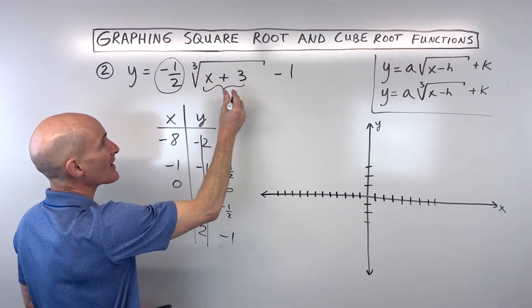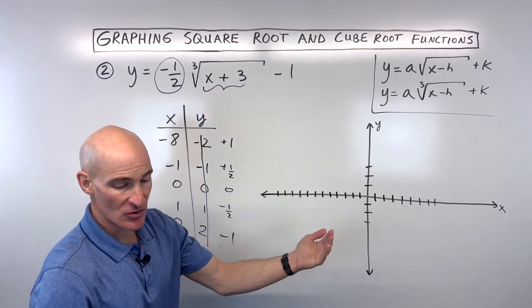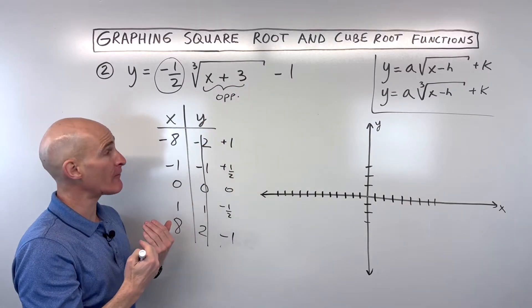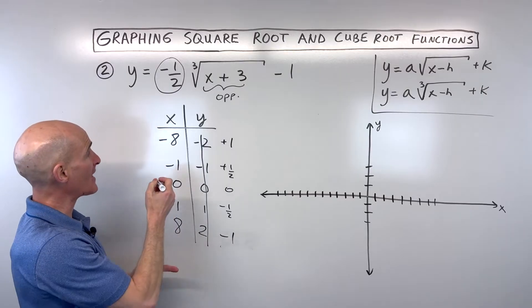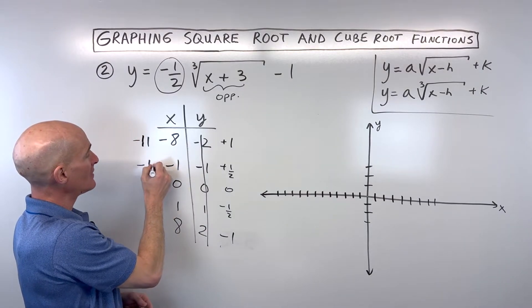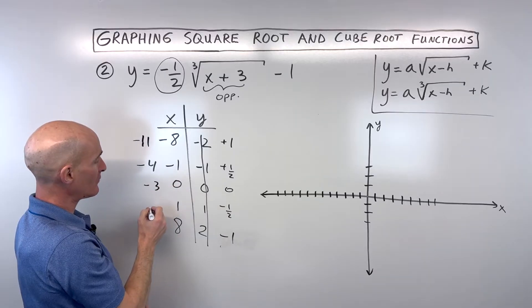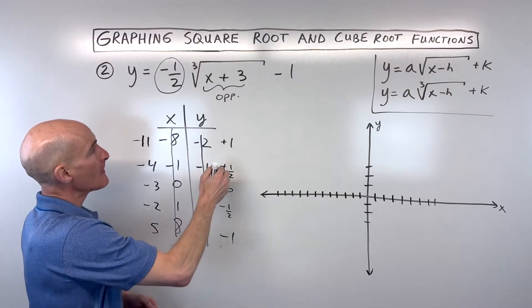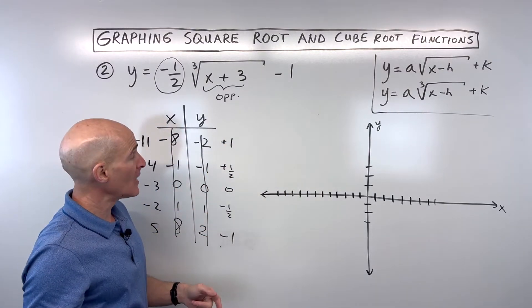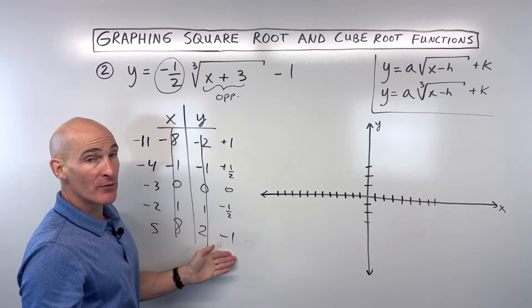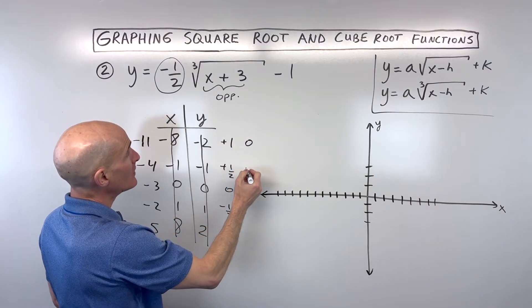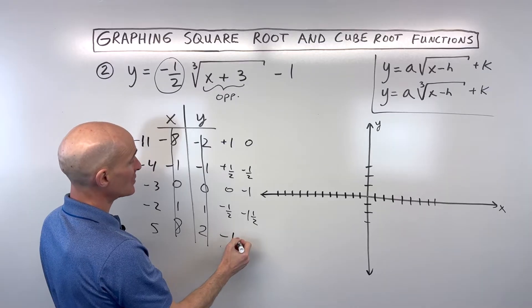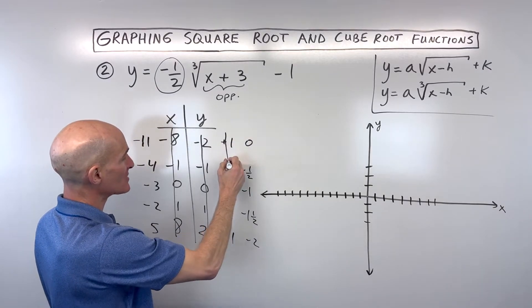The plus 3 is grouped with the x, so it affects the left-right direction but has the opposite effect — the plus 3 actually shifts it to the left 3, meaning we subtract 3 from the x-coordinates: negative 11, negative 4, negative 3, negative 2, and 5. Then the minus 1 shifts the graph down 1, so we subtract 1 from the y-coordinates: 0, negative one-half, negative 1, negative one-and-a-half, and negative 2.